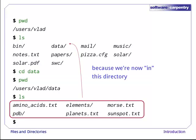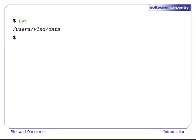Okay, we can go down the directory tree. How do we go up? If we're still in Users/Vlad/data, we can use cd dot dot to go up one level.